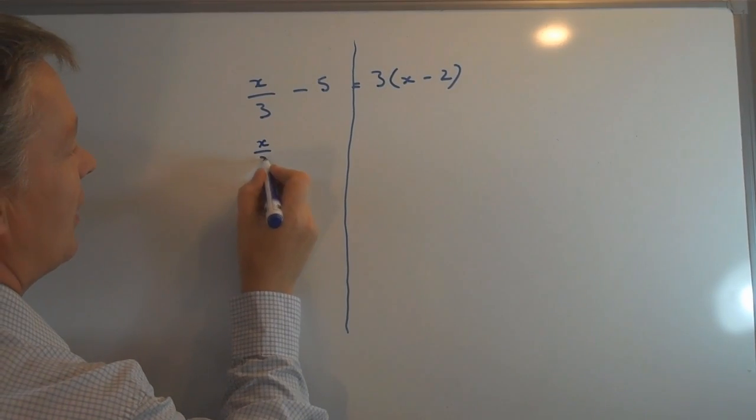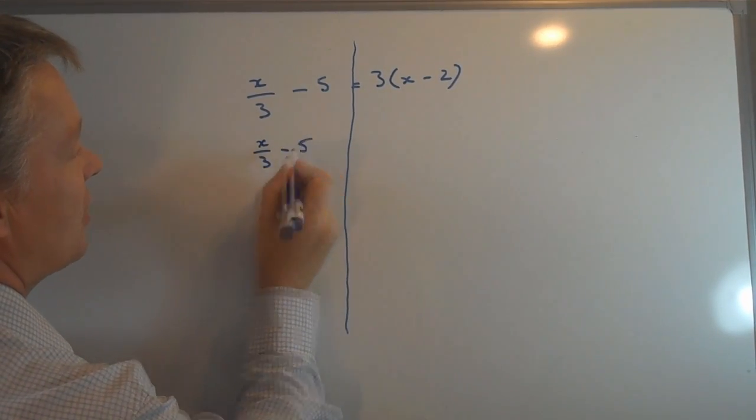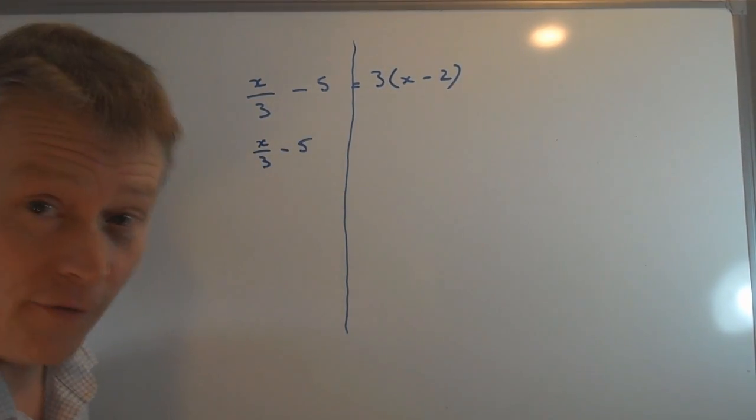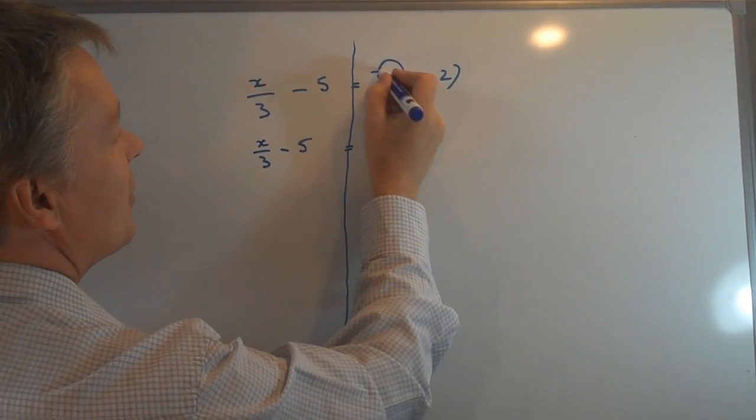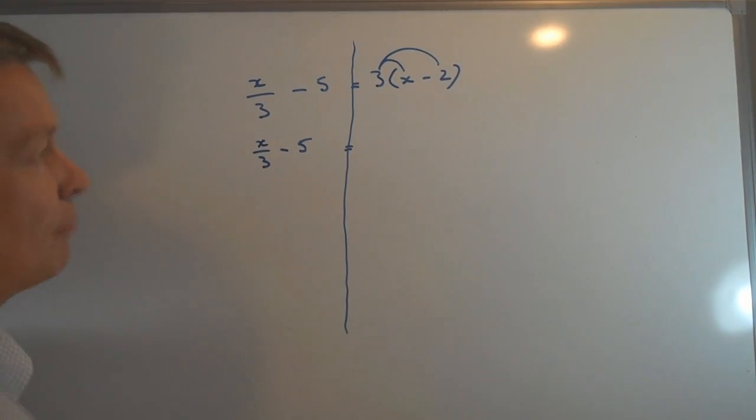On this side I'm going to write out the same part which is x over 3 minus 5, and on this side I'm going to multiply the first term and the second term by 3.